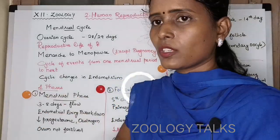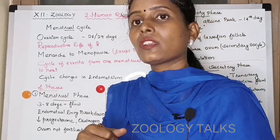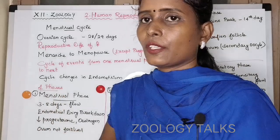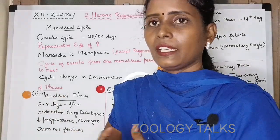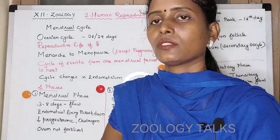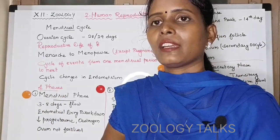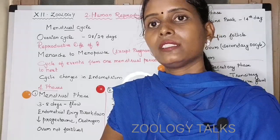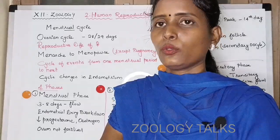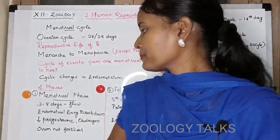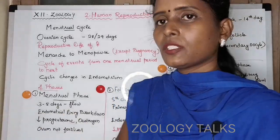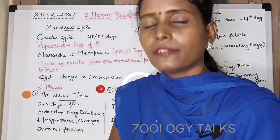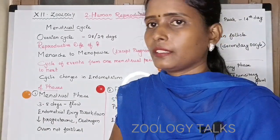The first phase is the menstrual phase, which lasts about 3 to 5 days. The menstrual phase is characterized by menstrual flow, which lasts about 3 to 4 days.